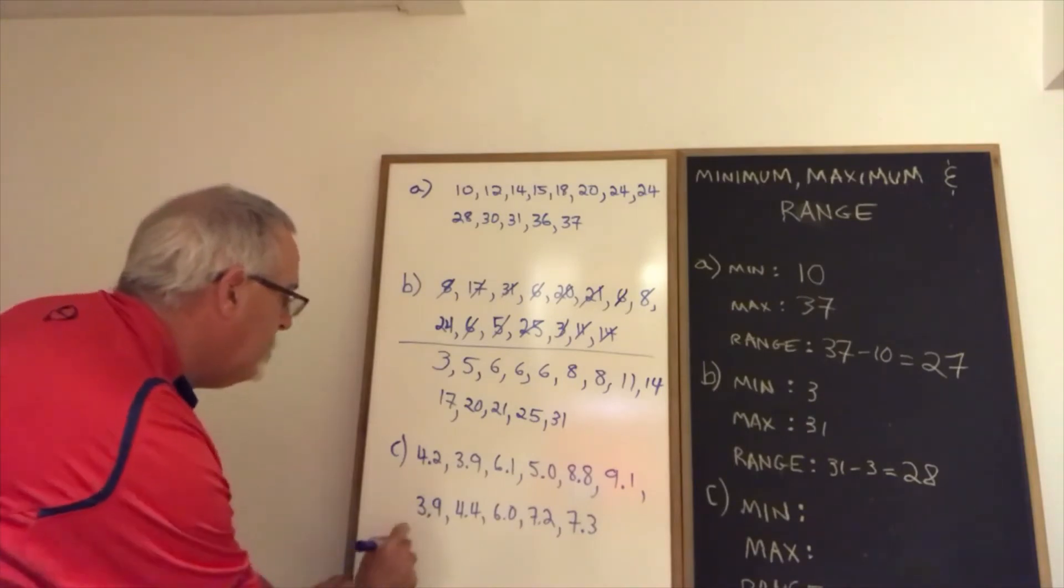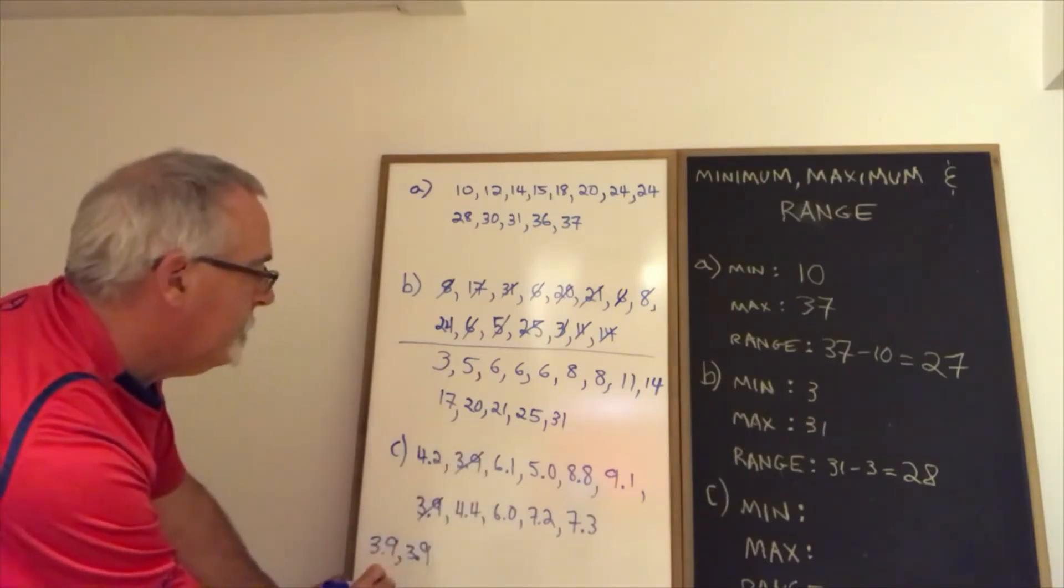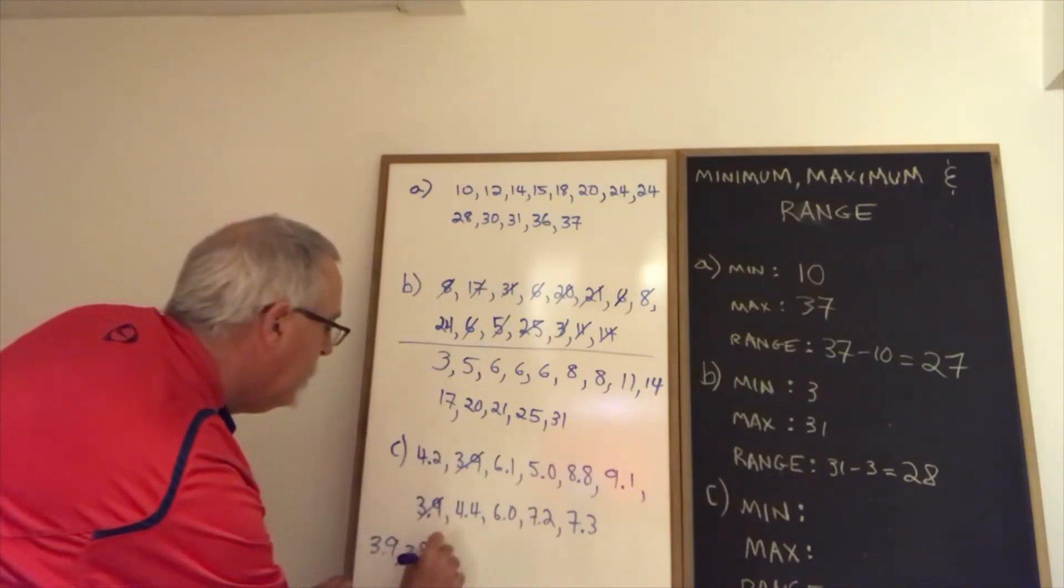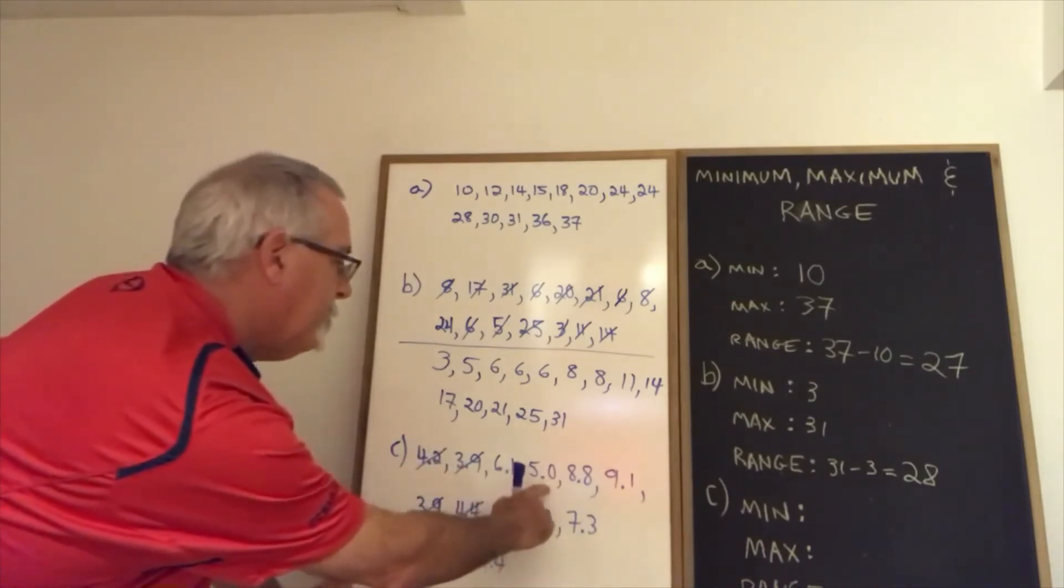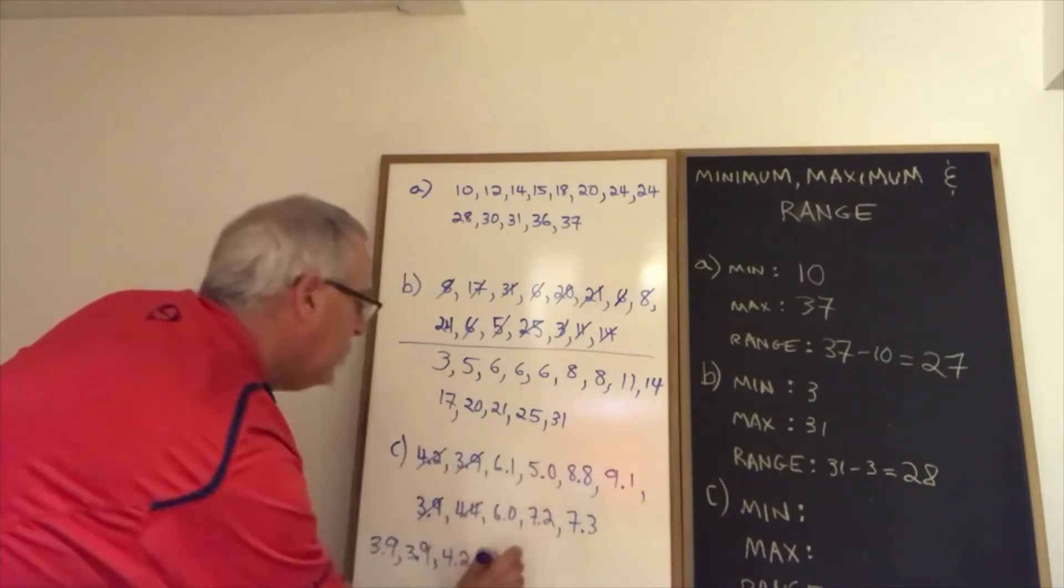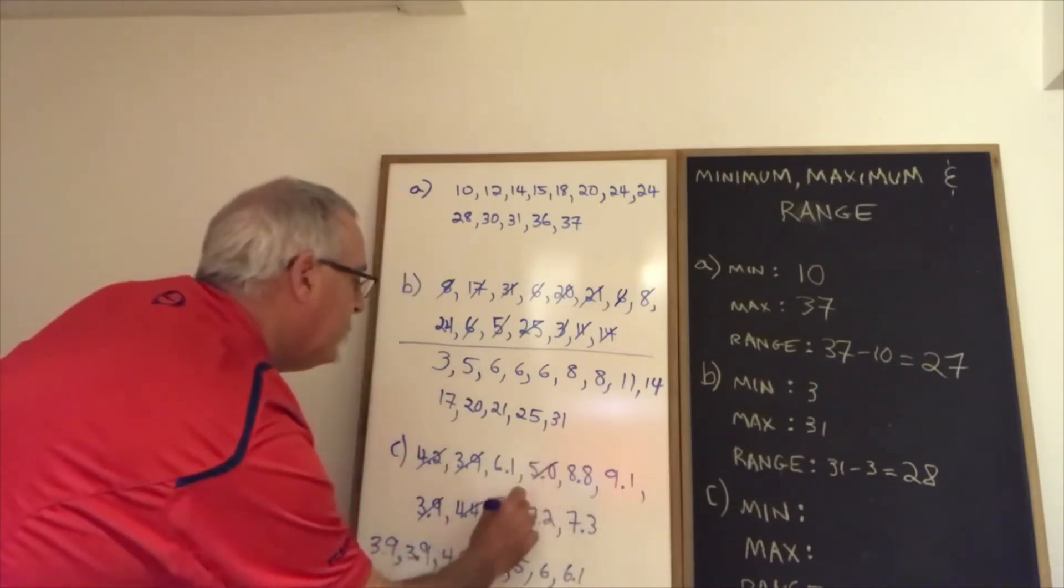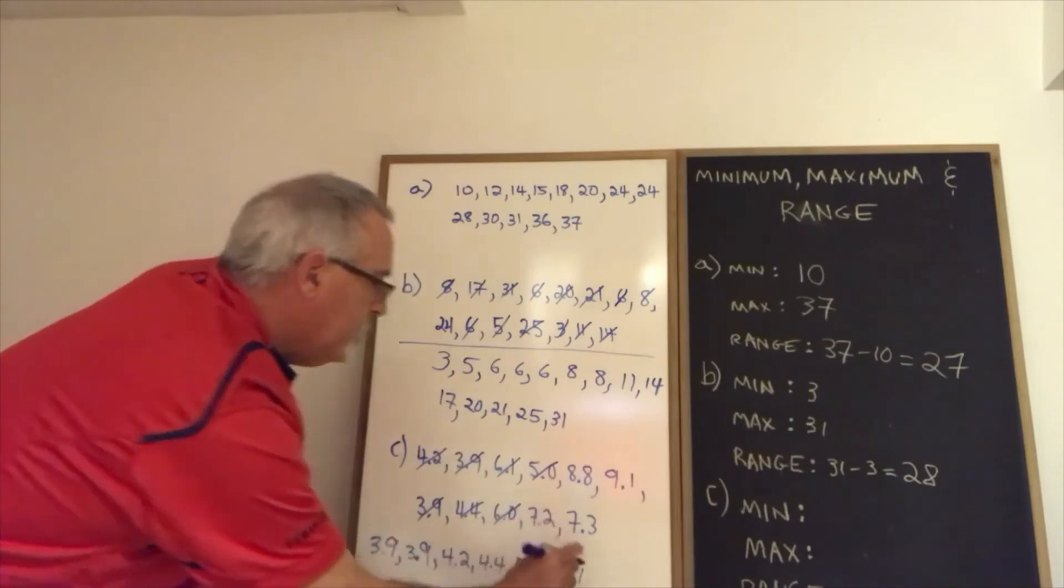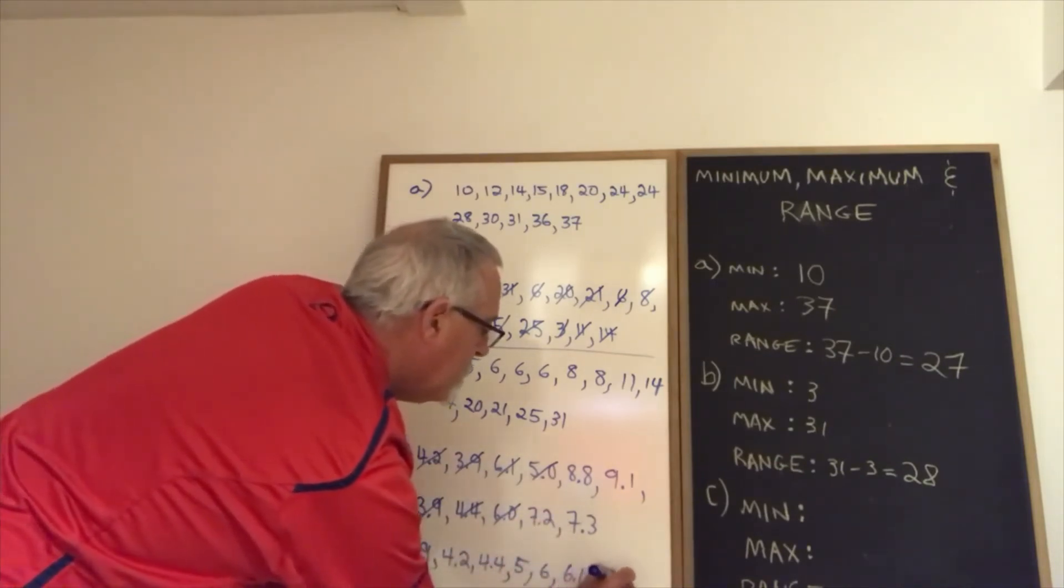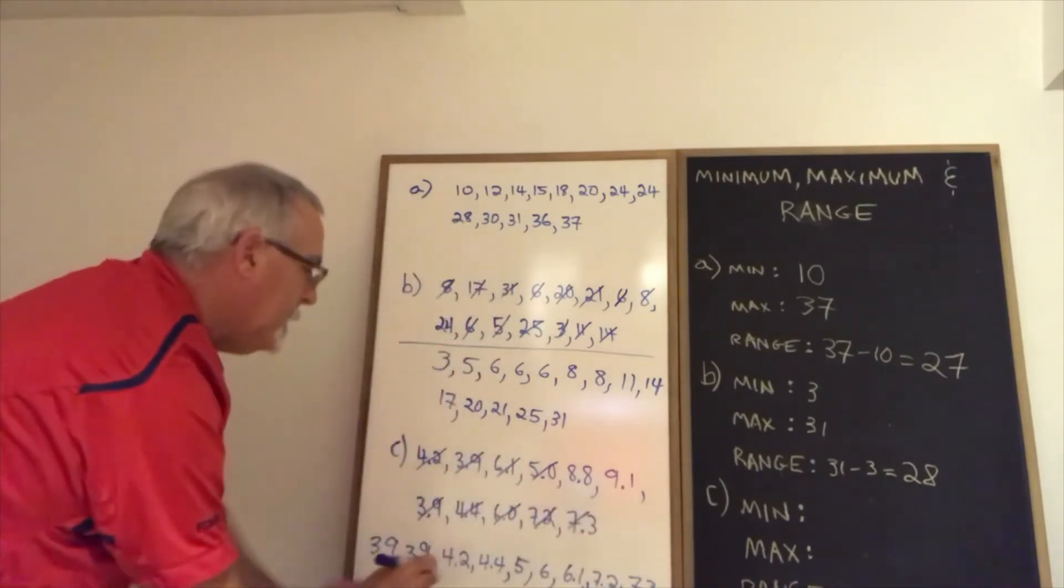The lowest numbers I'm seeing are two 3.9s. Then we have 4.2 and 4.4. 5.0, 6.0, 6.1. I didn't bother writing the .0s here. 7.2, 7.3.